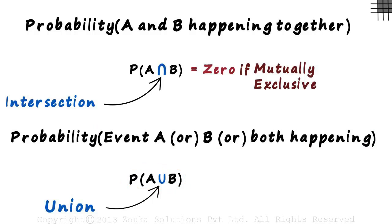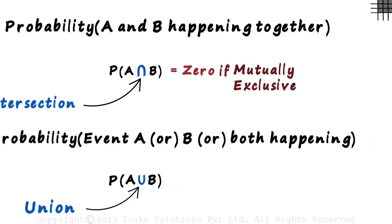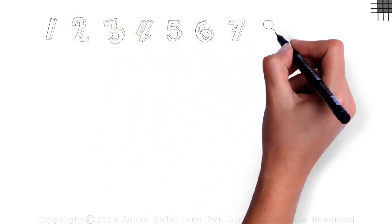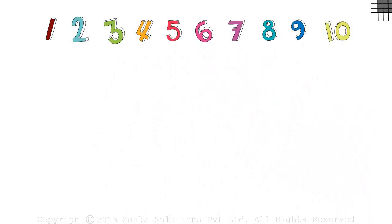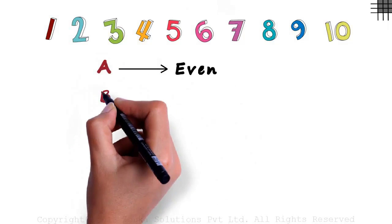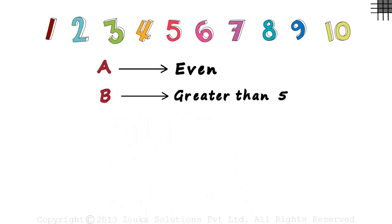Let's look at a very simple example to understand this. Consider the set of first ten natural numbers, from one to ten. Now consider two events. Let A be the event of getting an even number, and let B be an event of getting a number greater than five.